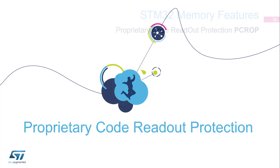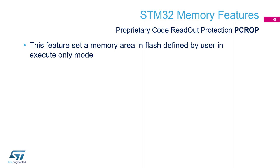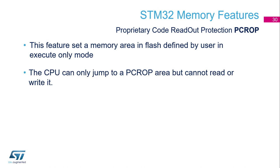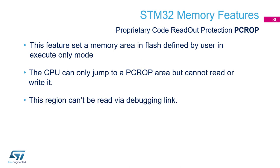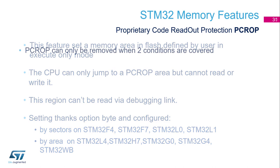Proprietary code read-out protection, also called PCROP — I will use this acronym until the end of this presentation. This feature is a memory area in flash defined in execute-only mode, meaning the CPU can jump into this area to execute code but cannot read or write it. This region cannot be read even via the debugging link. It is configured via option bytes — it's a static protection — by sector for the F4, F7, L0, L1 families, and by area for the L4, H7, G0, G4, and WB.